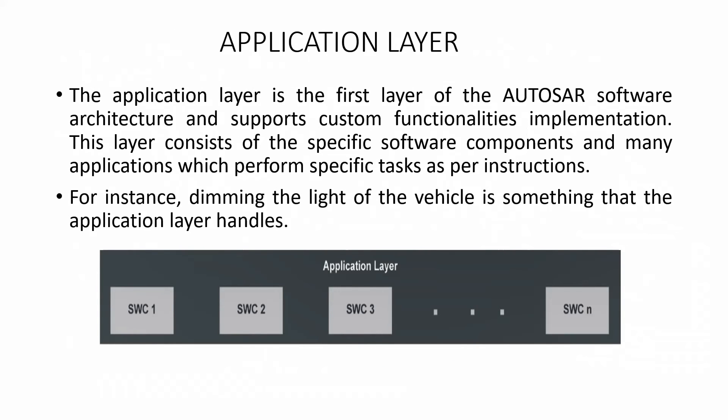The application layer is the topmost layer of the AUTOSAR software architecture. It contains multiple software components — application software components, sensor-actuator software components, and NVData software components. This layer consists of specific software components and applications which perform specific tasks as per instruction. For example, dimming the light of the vehicle is one application that will be developed as a software component and placed in the application layer.